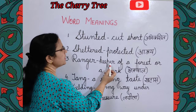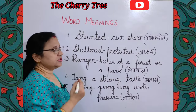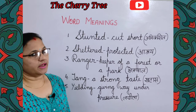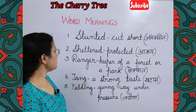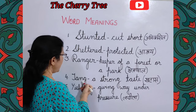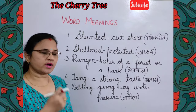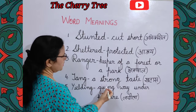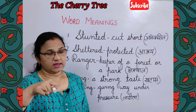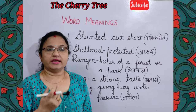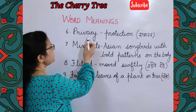Next is 'ranger' — keeper of a forest or a park. Jisay hindi me chhetrapal bhi kehte hain — jho jungle ya park ki dekbhal karta hai. Next is 'tang' — a strong taste, khataz bhara, tiesh khataz swad. Next is 'yielding' — giving way under pressure. Dabane par jho cheez dab jaye — lachila ya dabel.